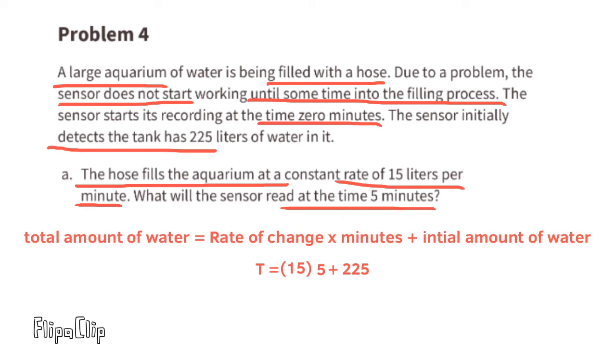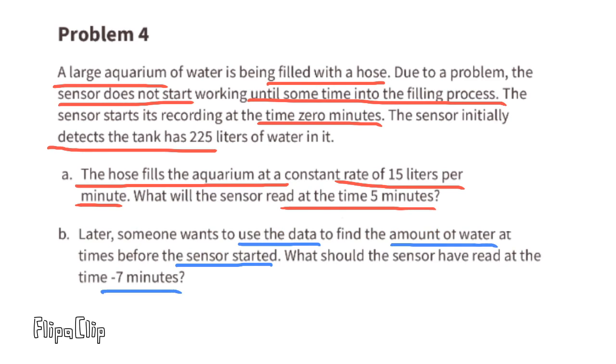We can write the equation t equals 15 times 5 plus 225. The 15 represents the constant rate at which the water is being filled, the five represents the five minutes that you're filling the tank, and the plus 225 represents the number of liters that the sensor initially detected in the tank. The t represents the total amount of water. After five minutes, the sensor would read 300 liters of water in the tank.